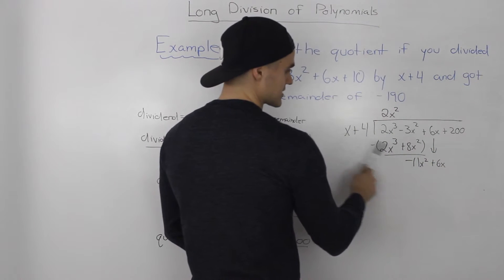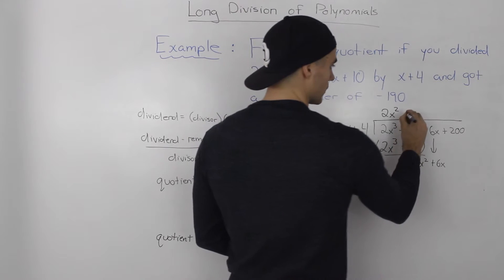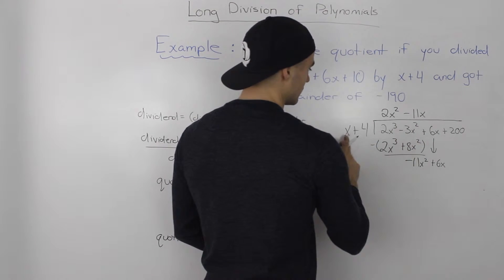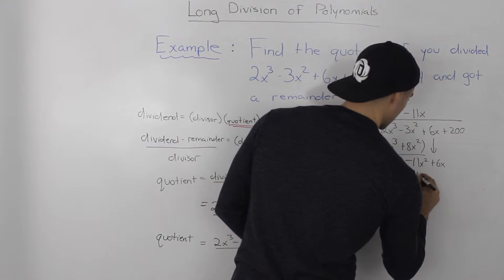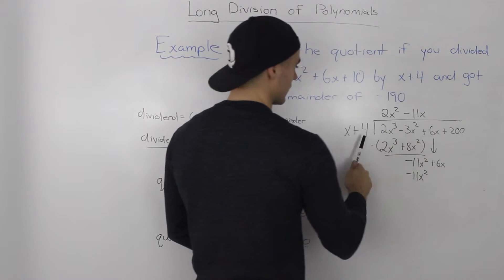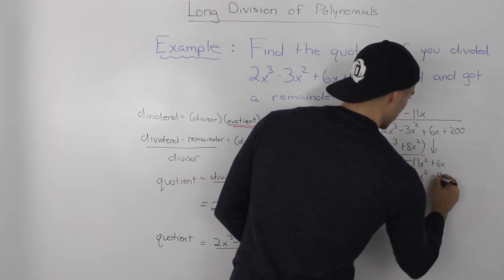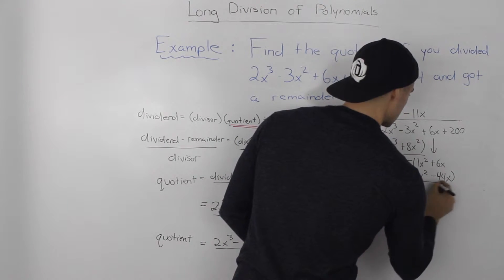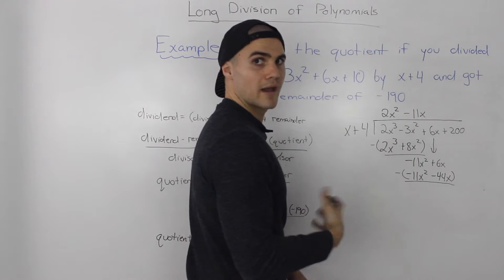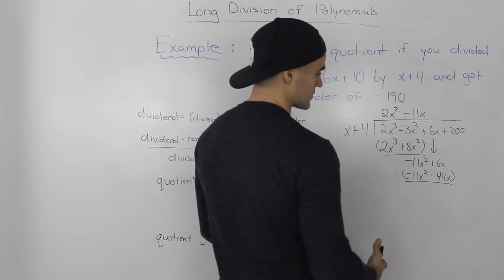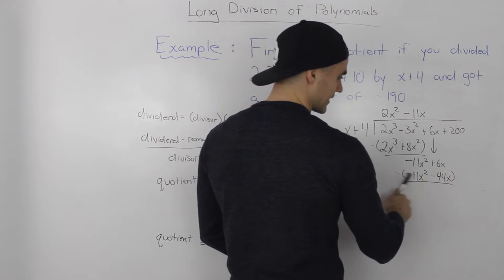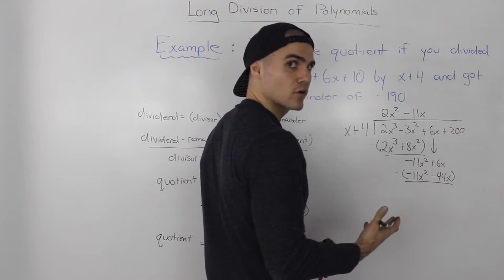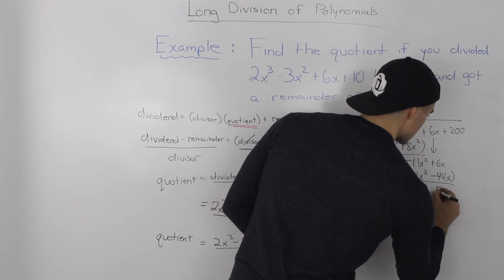How many times does x go into negative 11x squared? It goes negative 11x times. Then negative 11x times x gives us negative 11x squared. Negative 11x squared minus negative 11x squared nets out to 0. 6x minus negative 44x is the same as 6x plus 44x, which gives us 50x.